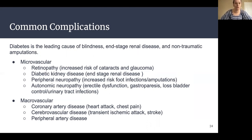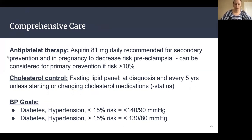Other microvascular complications include autonomic neuropathy — things like erectile dysfunction, gastroparesis, loss of bladder control, or urinary tract infections. Macrovascular complications we're worried about are coronary artery disease — heart attacks or chest pain — cerebrovascular disease such as transient ischemic attacks or strokes, and peripheral artery disease. For comprehensive care, we recommend antiplatelet therapy with aspirin 81 milligrams daily for secondary prevention — so if you've already had a heart attack or have coronary artery disease, a baby aspirin can help prevent future events. It's also recommended in pregnancy to reduce the risk of preeclampsia and can be considered if you're at high risk for cardiovascular complications.